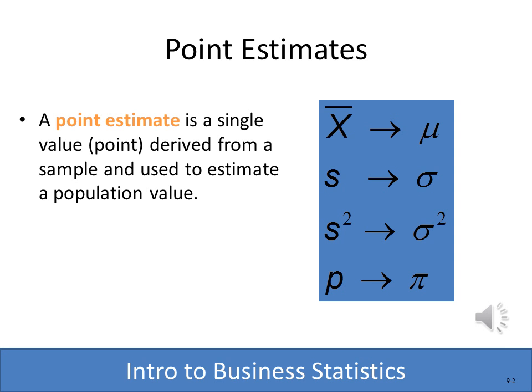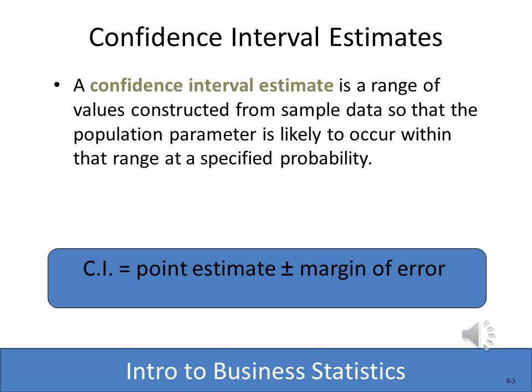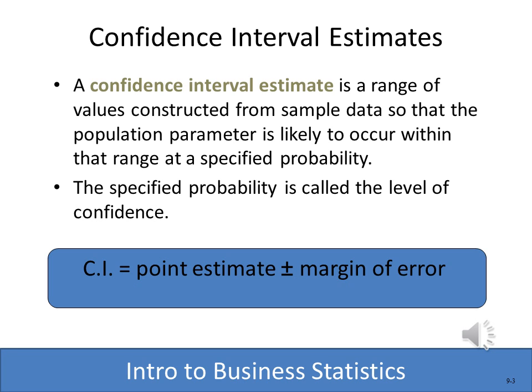In previous lessons we've already learned that a sample mean is an estimate of the population mean, and that's the case with every sample statistic. We call those point estimates. A point estimate is a single value derived from a sample used to estimate the population value. An estimate is just that — an estimate. So what we'd like to do with our point estimate is develop an interval estimate, a range of values.